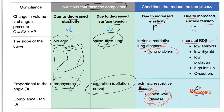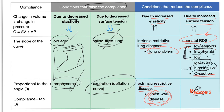Decreased compliance due to increased surface tension: neonatal respiratory distress syndrome. This occurs in premature babies and C-section babies because they are not exposed to the stress of the vaginal canal, which normally stimulates cortisol production and therefore surfactant synthesis. Causes of neonatal RDS include low steroids, low thyroxin, and low prolactin — because those three stimulate surfactant production. High insulin also causes it, because insulin inhibits surfactant — leading to increased surface tension and decreased compliance.